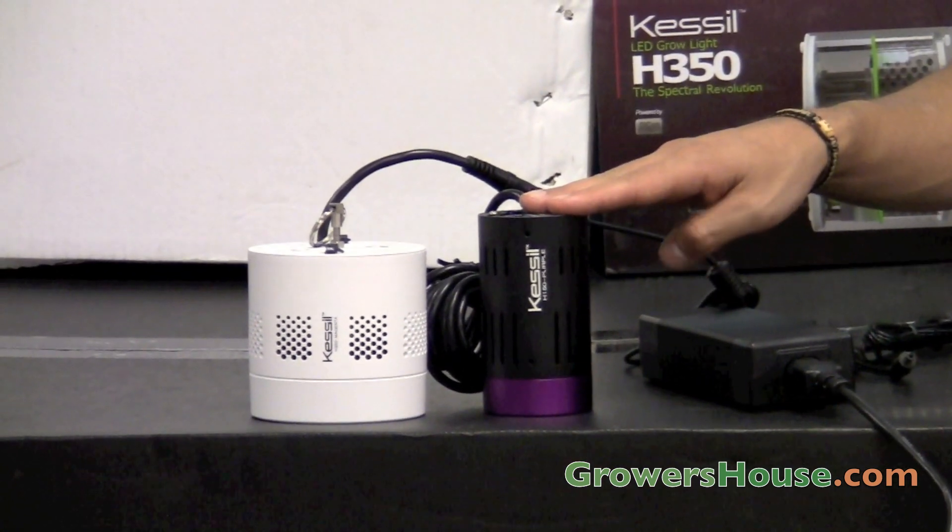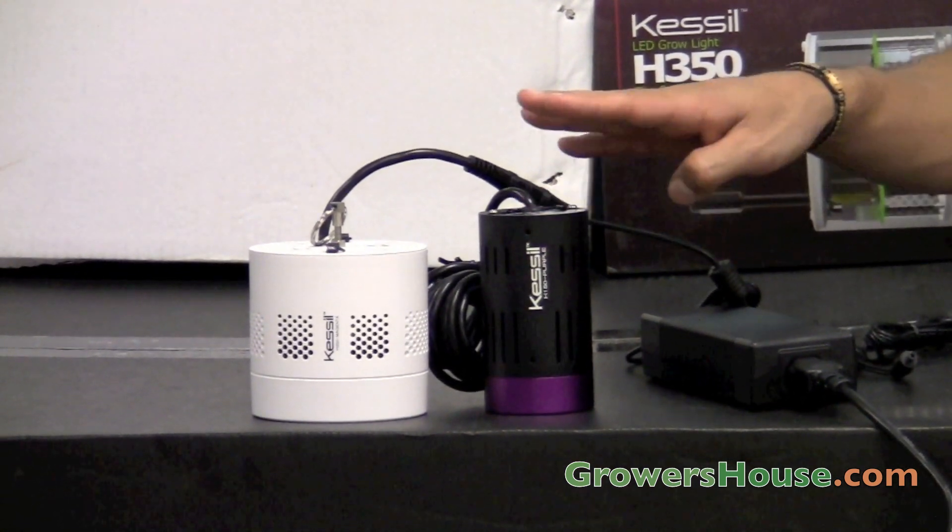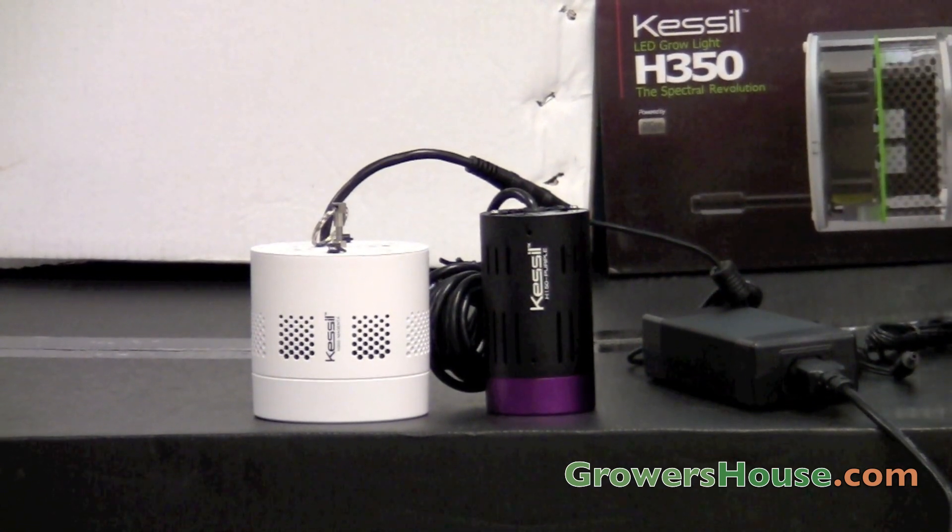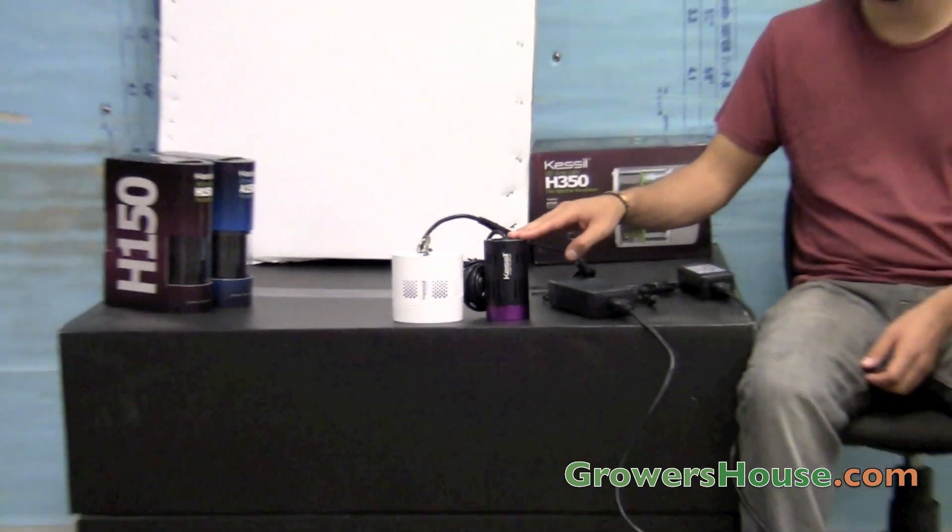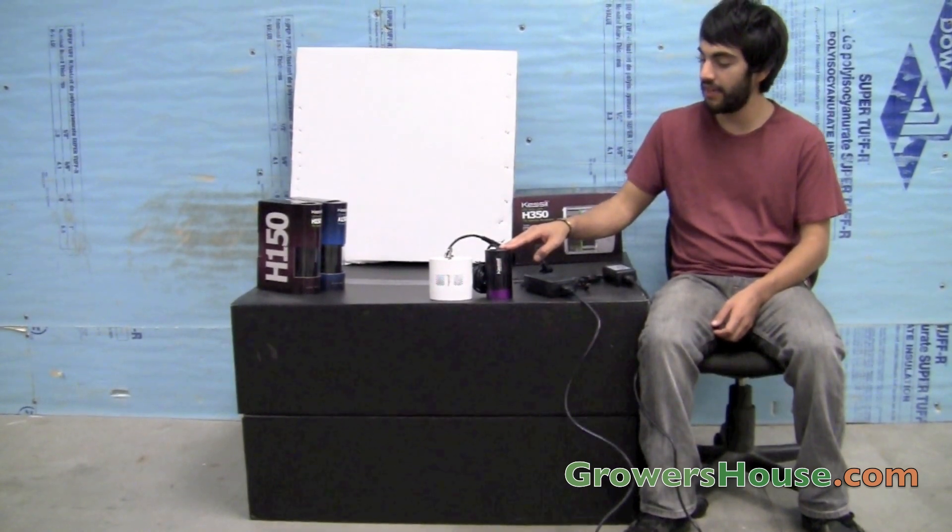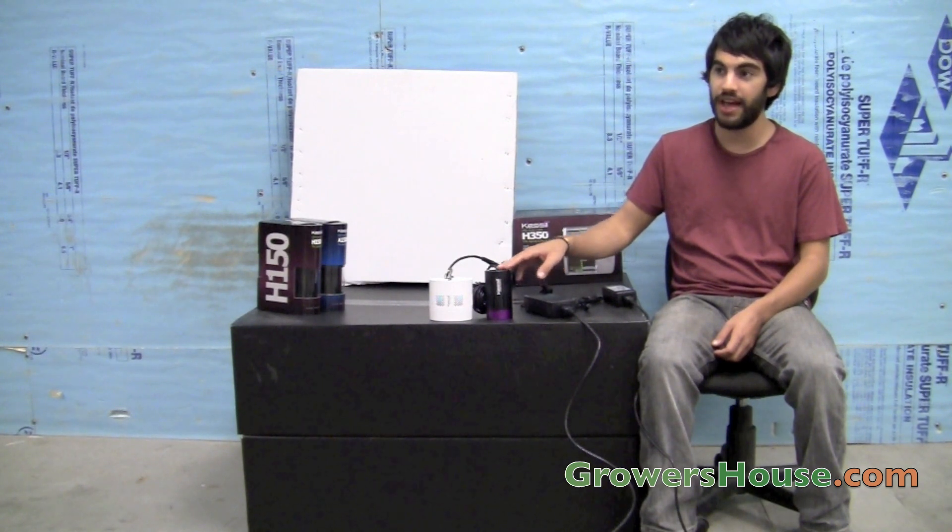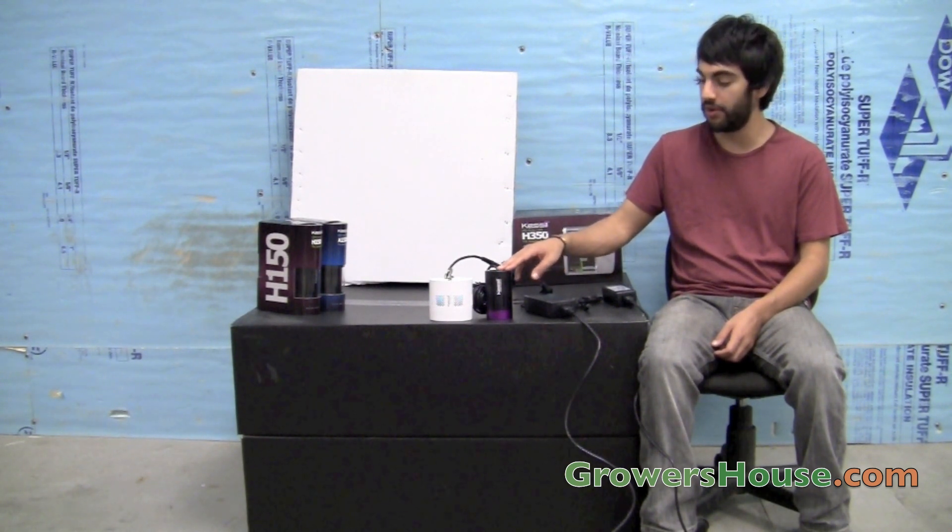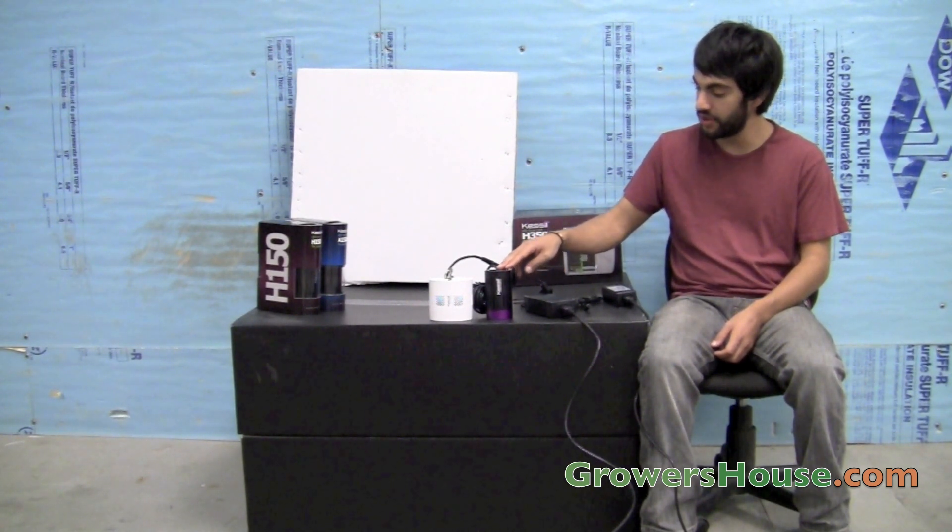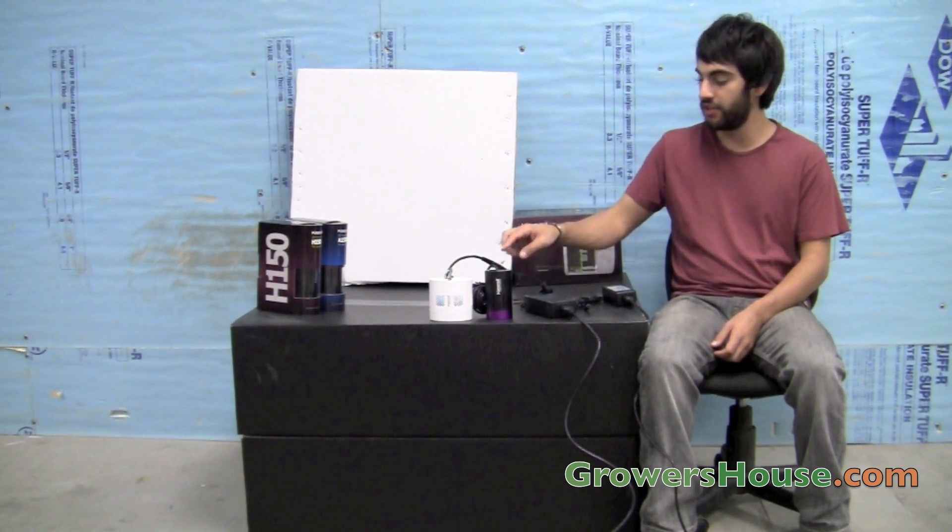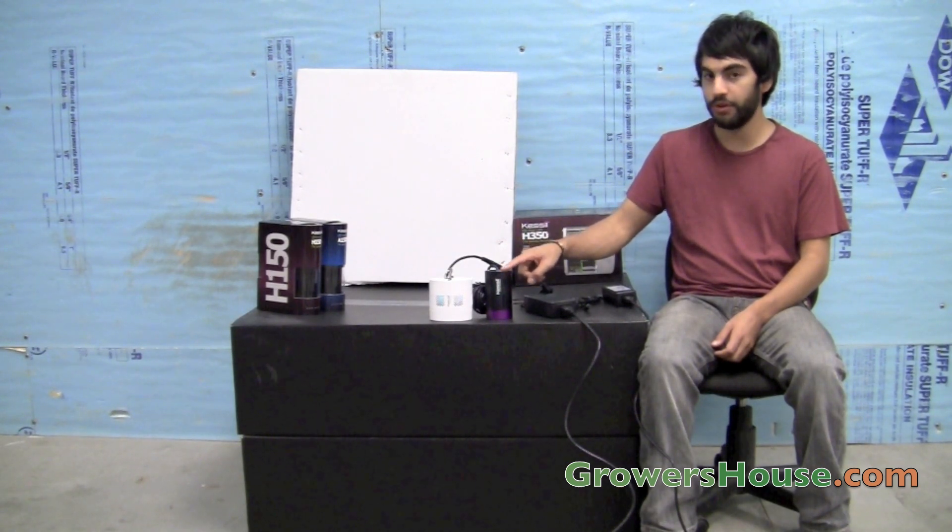The first one I'm going to show off here is Kessil's original unit, known as the H-150. Now this unit is made up of a dense matrix array that has multiple LEDs and has a combined total of 36 actual watts of power that it puts out. Now this unit I'm showing you here is in the purple spectrum, and they make this unit in a blue, red, purple, and magenta.